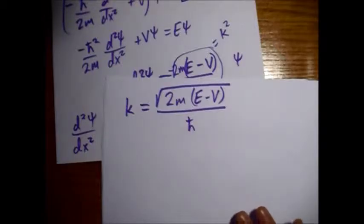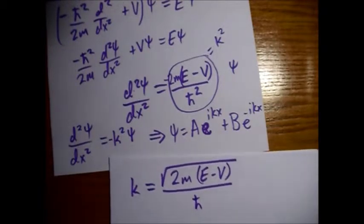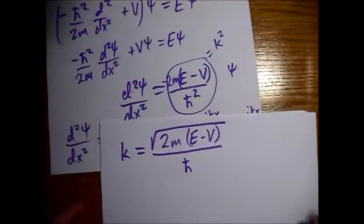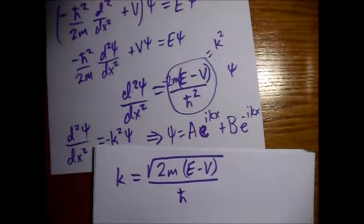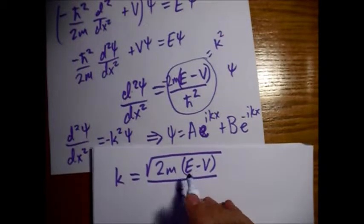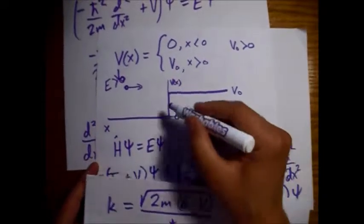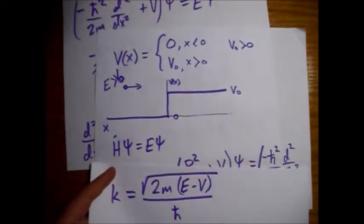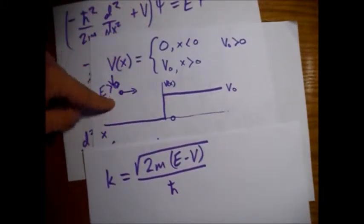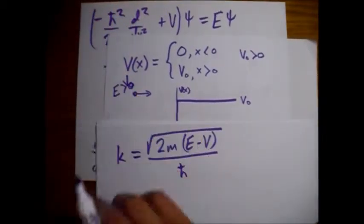Now, when the energy is less than the potential, you'd get a minus sign under the square root, and you'd get tunneling — a decaying exponential. But that's not the case here, because our energy is greater than the potential, so we'll still get oscillation.